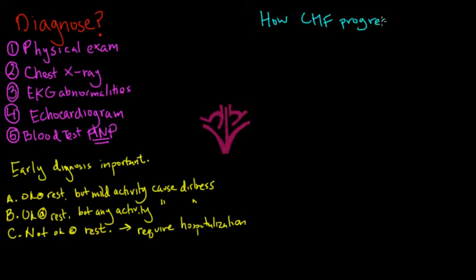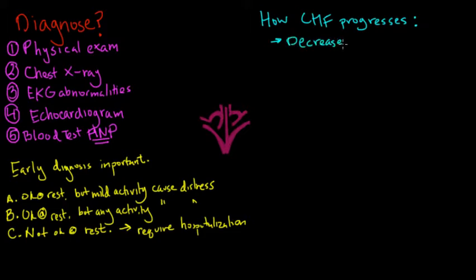Now let's talk about how CHF progresses — specifically the normal physiological mechanisms that are activated in a person with CHF that can cause worsening of the patient's condition. A good framework is to understand how our body responds to a decrease in blood pressure. Due to the insufficient pump action of the heart, we're going to have a decrease in the pressure generated in our blood vessels, and our body is going to respond to that.